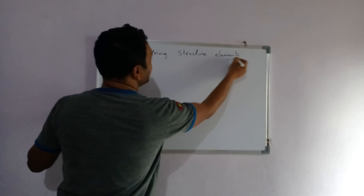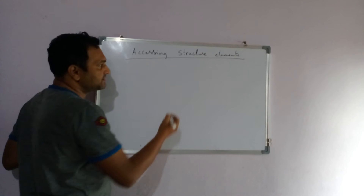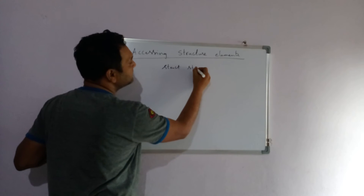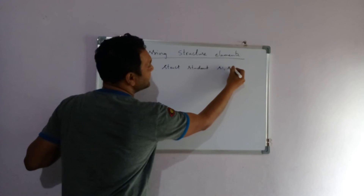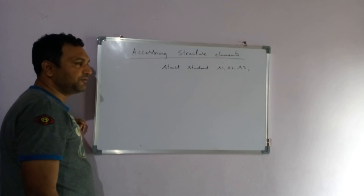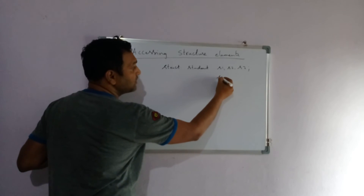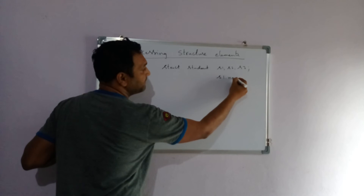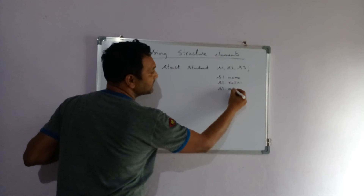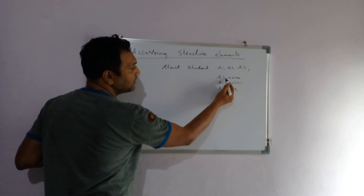Accessing the structure elements, or you can say accessing the structure members. When we create structure variables — when we say struct student s1, s2, s3 — we have declared three variables. If you want to access the name, the operator we use is the dot operator. To link between the structure variable and the member, we use the dot operator.